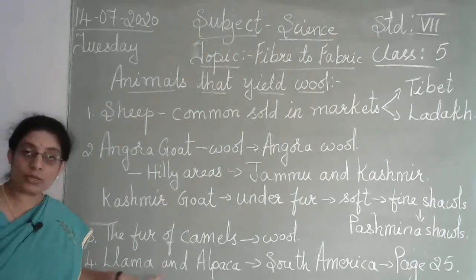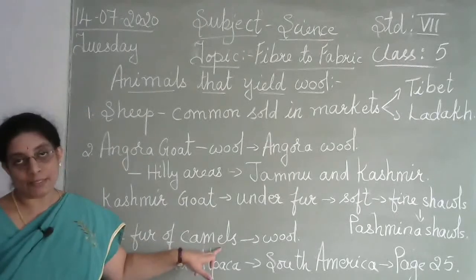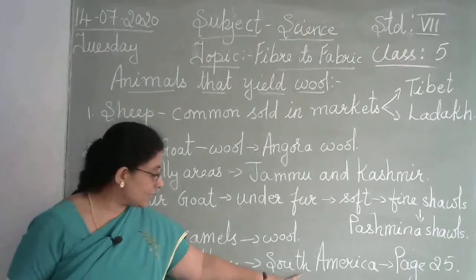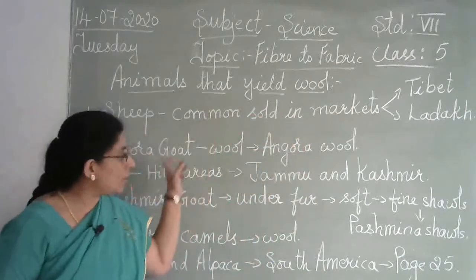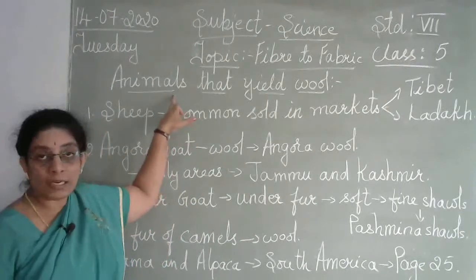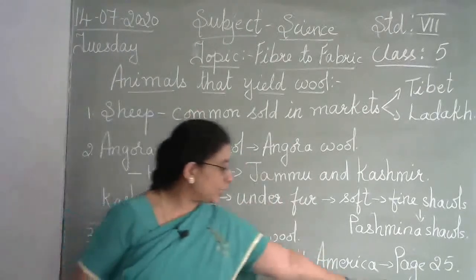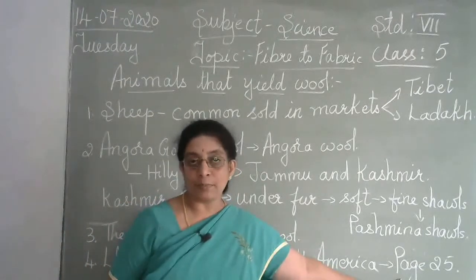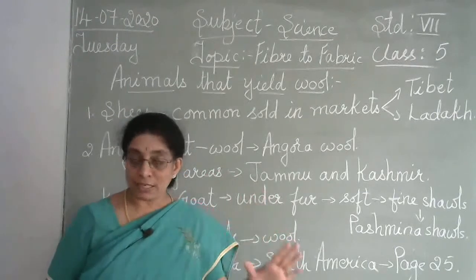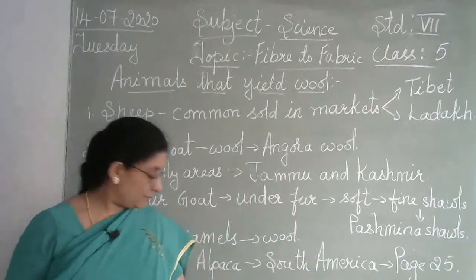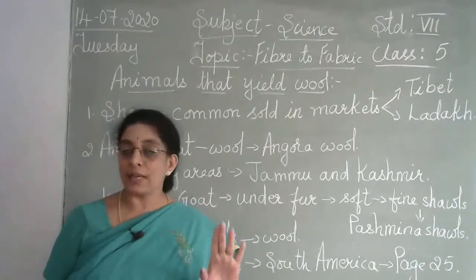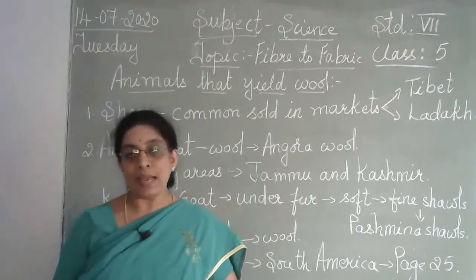Llama and alpaca resemble camels but are not found in India — they are found in South America. To get a brief view of all the animals that yield wool, refer to page number 25. There you will find pictures of all different varieties: sheep, goat, Kashmir goat, camels, llama, and alpaca — so you can see the difference between each animal.